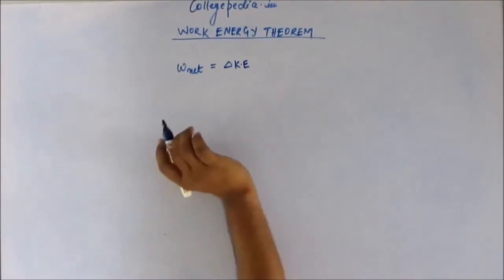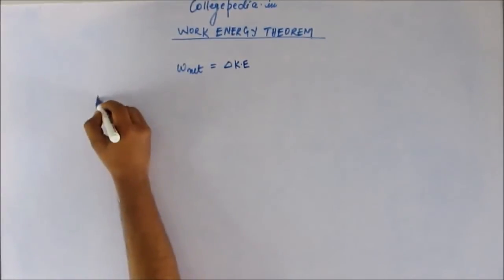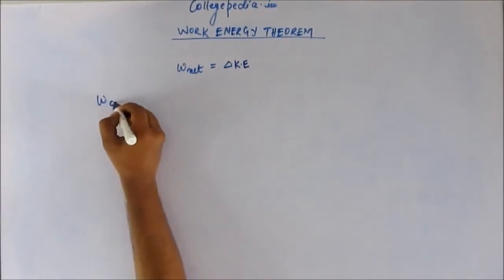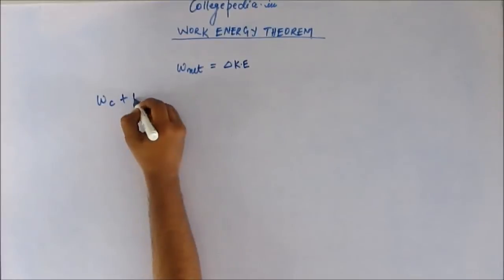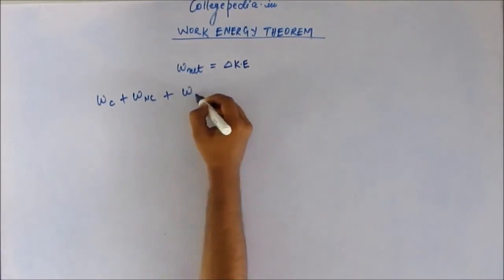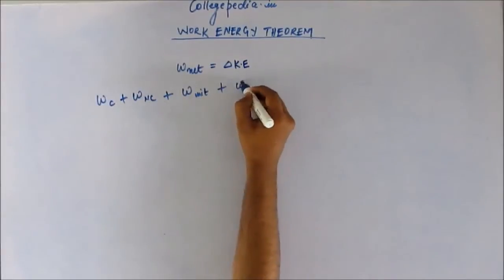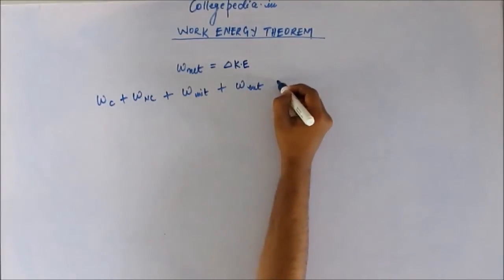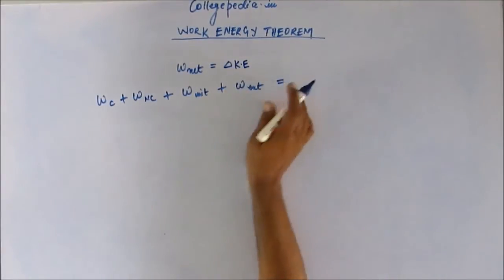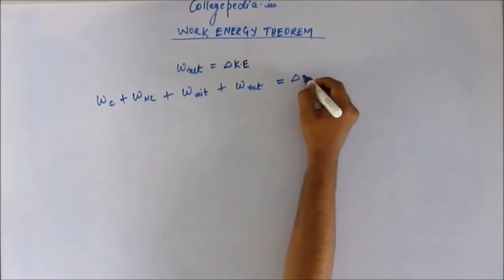Net work done means work done by all the forces — work done by conservative forces, work done by non-conservative forces, work done by internal forces, work done by external forces. Work done by all of them equals the change in kinetic energy.